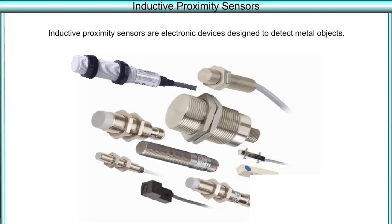Welcome to this video on inductive proximity sensors. Inductive proximity sensors are electronic devices designed to detect metal objects.